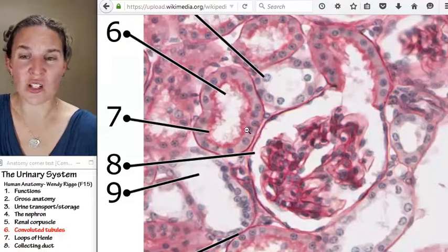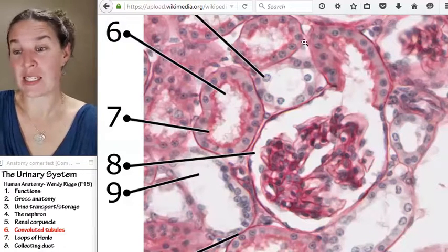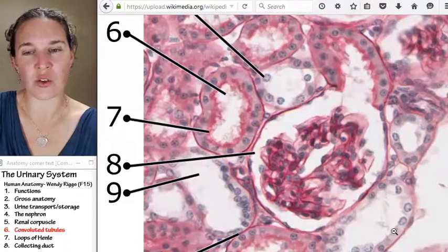These are cuboidal cells. Some of them get a little taller. They kind of maybe lean toward columnar-ish, but for the most part, at least definitely what I'm seeing here, these are cuboidal cells.